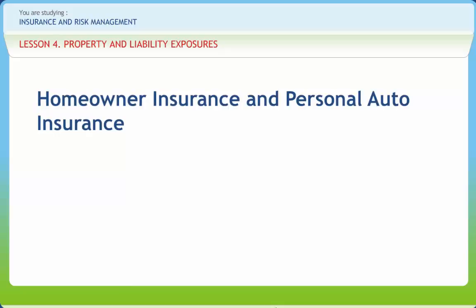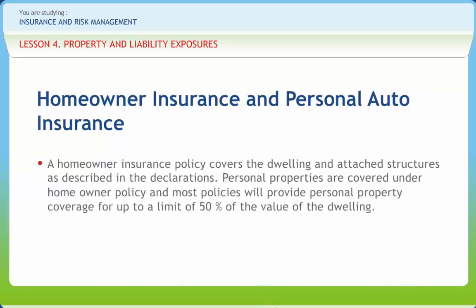The property insurance market is designated for different properties stated in the policy. The most common policies held by almost every household are the homeowner policy and personal auto policy. There is a legal requirement in every state to carry liability coverage when operating a motor vehicle. The motor vehicle liability insurance is proof of financial responsibility and the amount covered differs from state to state. A homeowner insurance policy covers the dwelling and attached structures as described in the declarations. Personal properties are covered under homeowner policy and most policies will provide personal property coverage for up to a limit of 50% of the value of the dwelling. This is a policy designed as a whole policy to include limited coverage on injury or property damages of others.